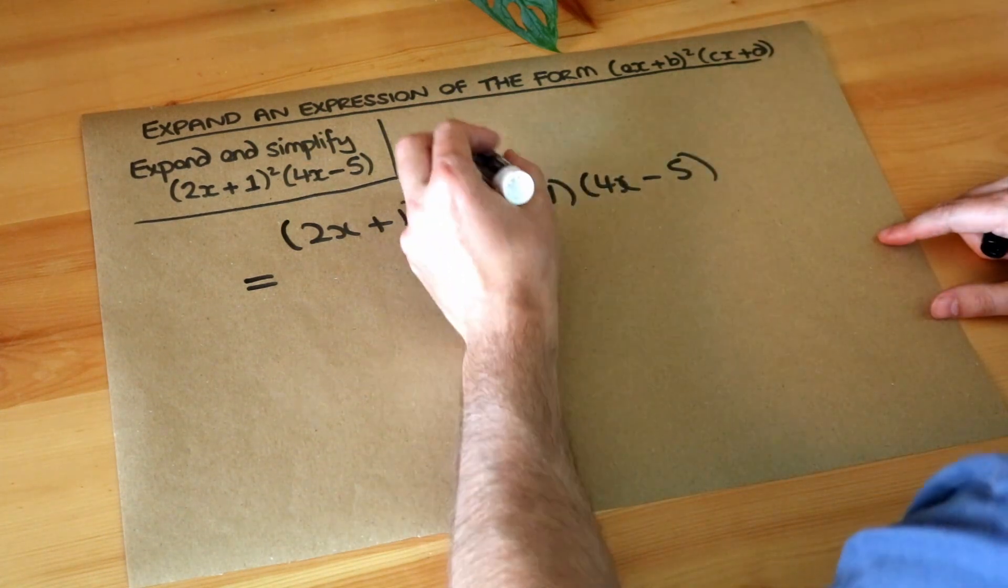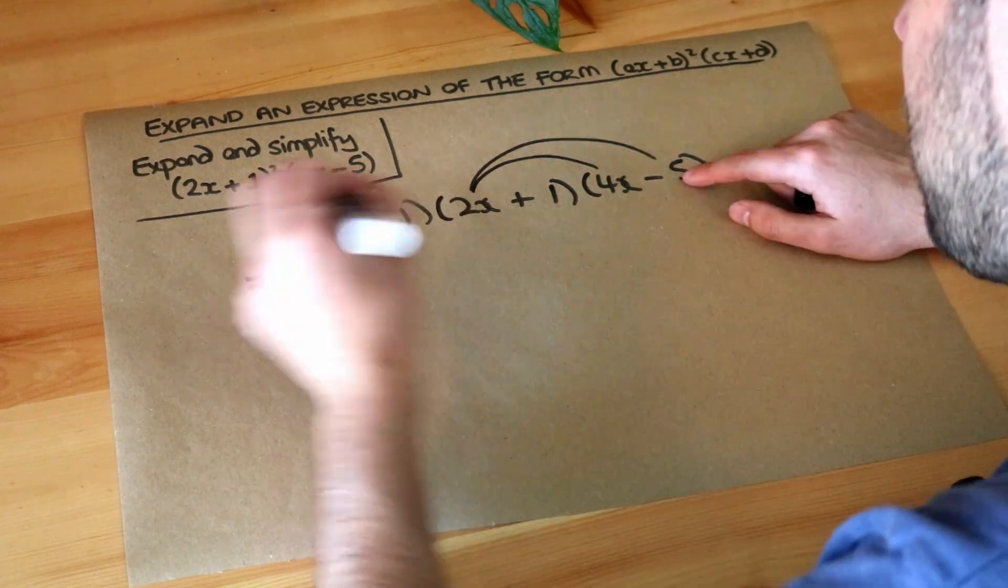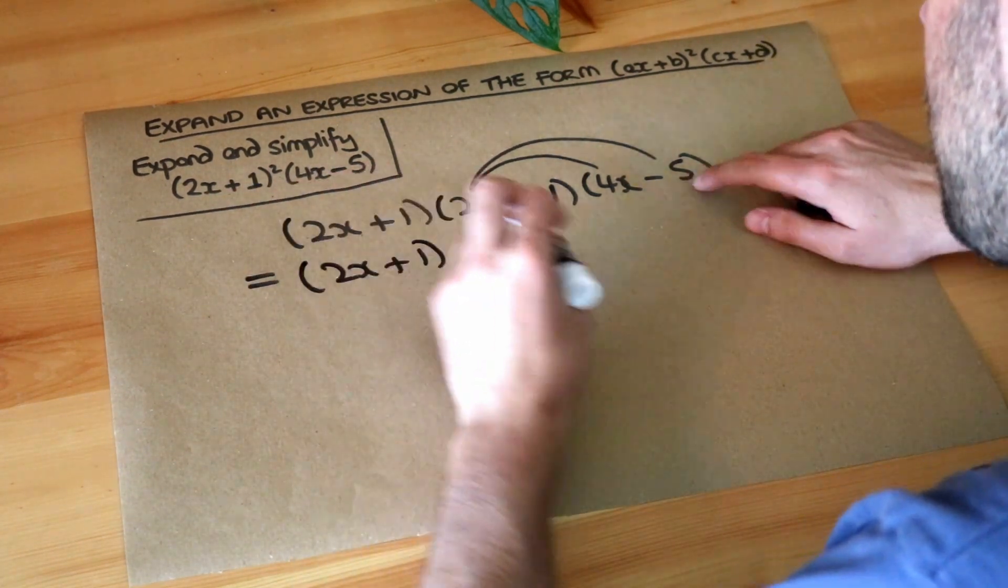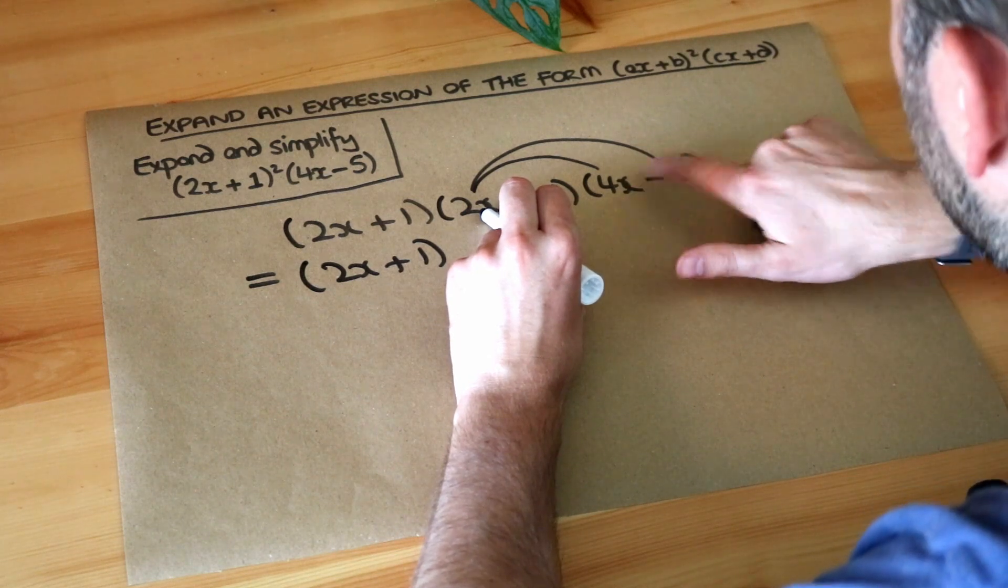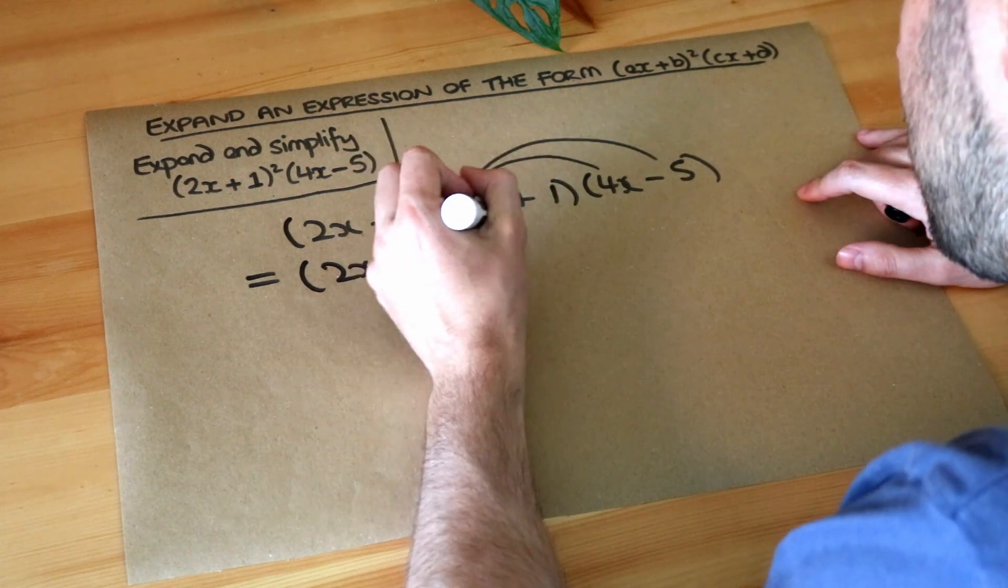So I'm gonna leave the 2x plus 1 as it is. I'm going to do the 2x times each of these terms here first. So 2x times 4x is 8x squared. 2x times minus 5 is minus 10x.